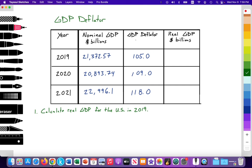In the GDP deflator column, we have values compared to a base year. The base year would be 100, and we're measuring the rate of inflation from that base year. In 2019 the deflator is 105, then prices rising to 109 compared to that base year, then increasing to 118. A question on an exam might ask you to calculate real GDP.